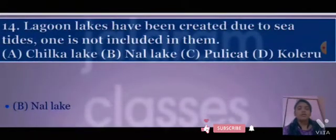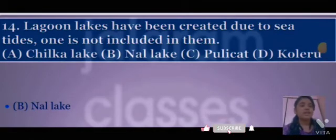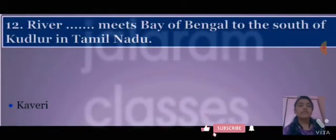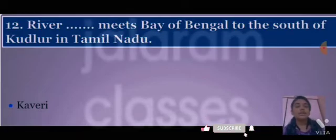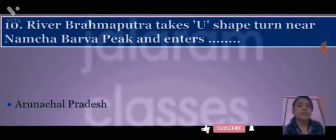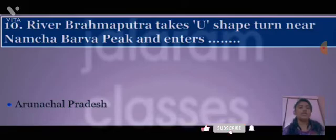True or false: the Vengurla river contains water throughout the year. Answer: false. Lagoon lakes have been created due to sea tides; which one is not included among them? Answer: B, null lake. Next: river blank meets the Bay of Bengal to the south of Kundaru in Tamil Nadu. Answer: Kaveri.